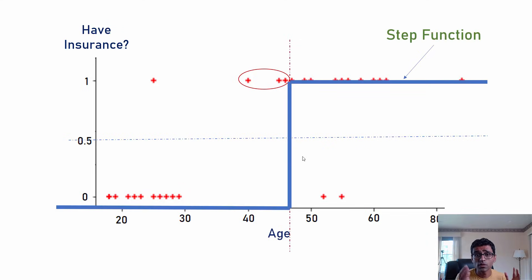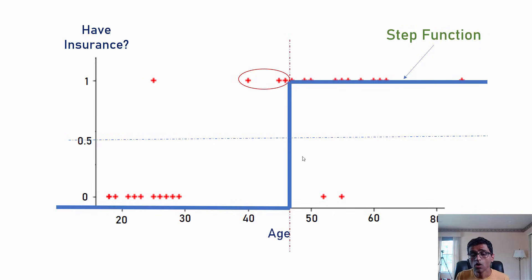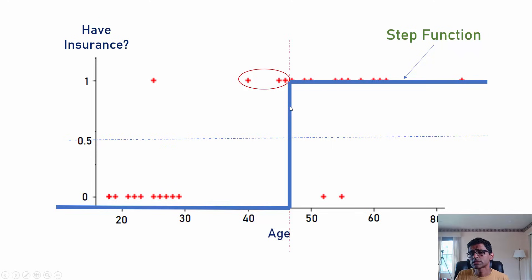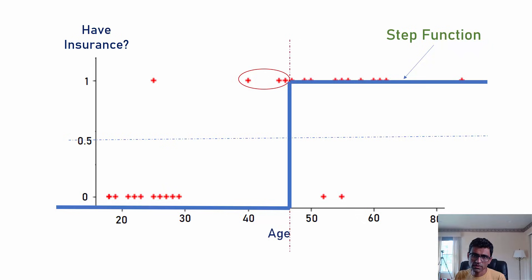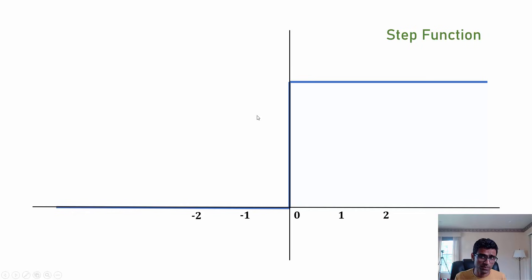The step function is one of the activation functions — it's not very popular but it is an activation function. For any age greater than, say, 46 years, you predict the person will buy insurance; otherwise they won't. You already saw the problem with the step function: it misclassifies some data points.